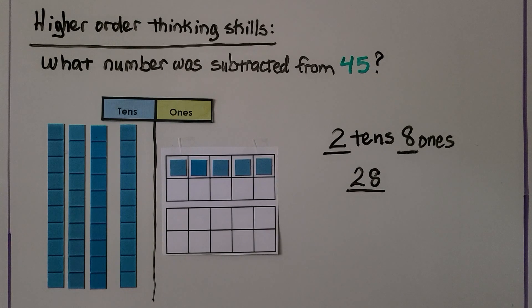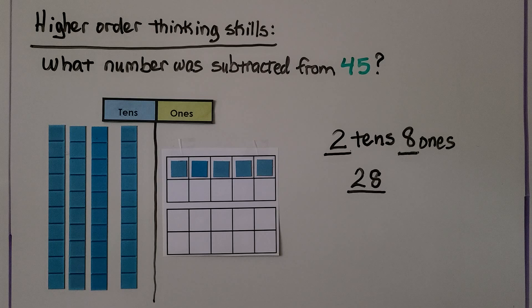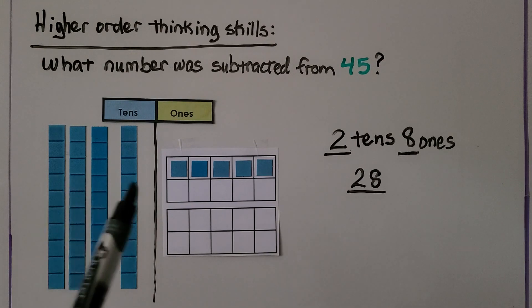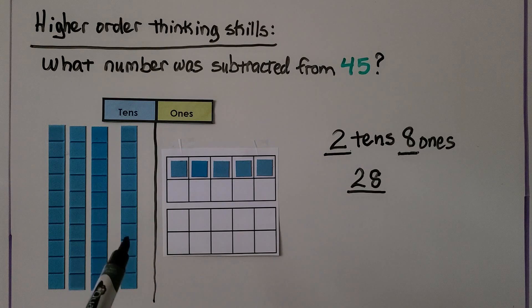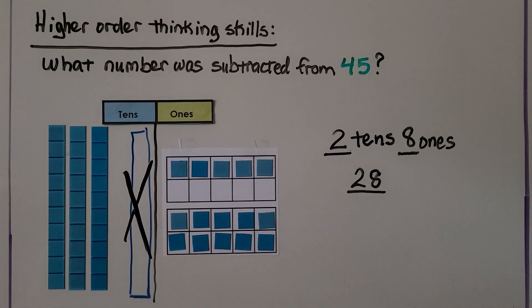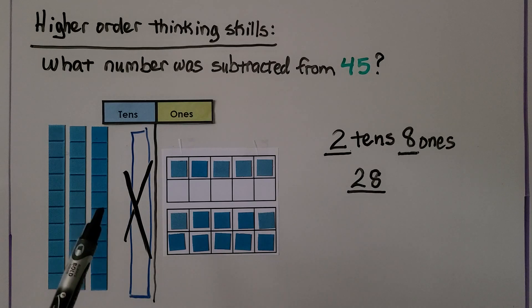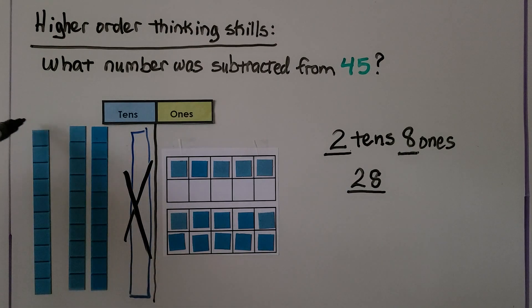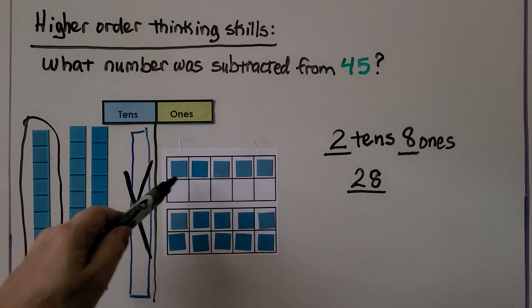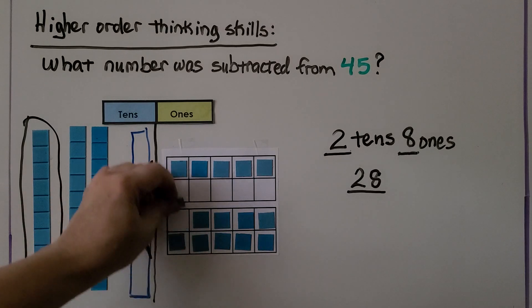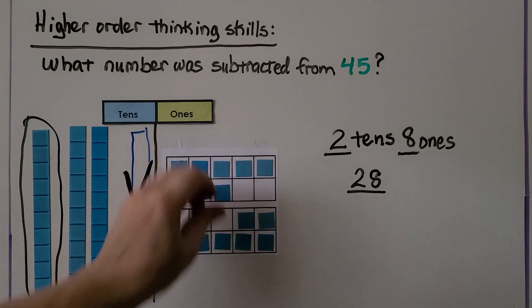Let's try some higher order thinking skills. What number was subtracted from 45 if the difference was 2 10s, 8 1s — that is, 28? Here we have 45 as 4 10s, 5 1s. We could trade one of these 10s for 10 1s. Now that 10 is gone and we made 10 1s. We need to make 2 10s, 8 1s, so we can take away a 10. Now we have 2 10s, but we only need 8 1s for our difference. We have 15 1s here, so we can set aside 8 1s and take the rest away.